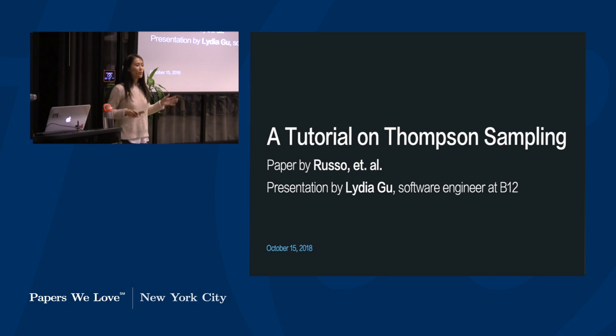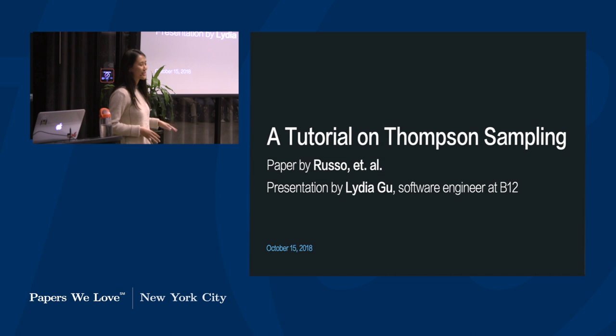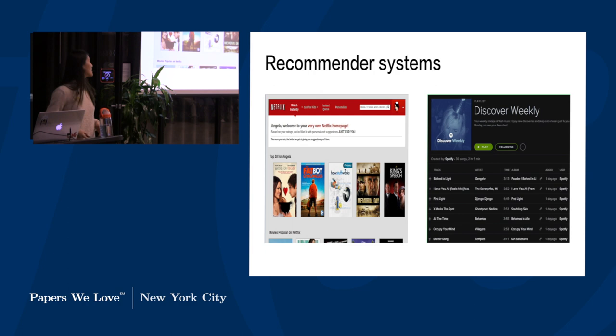So why did I pick this paper? There's been a lot of activity in the area of multi-armed bandits and Thompson sampling in the past few years, but no particular paper stood out as one I loved. So I went with the tutorial because it's a really great introduction with good examples and it's easy to read.